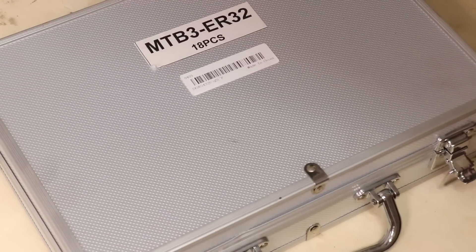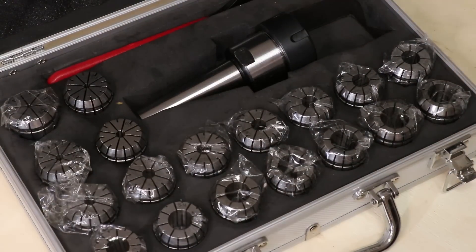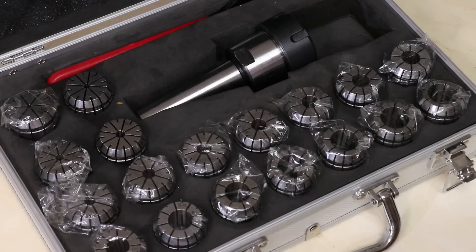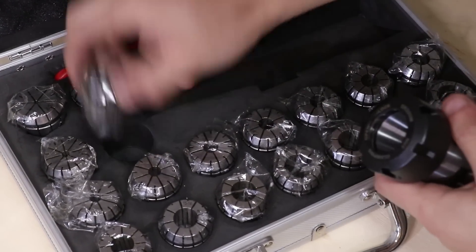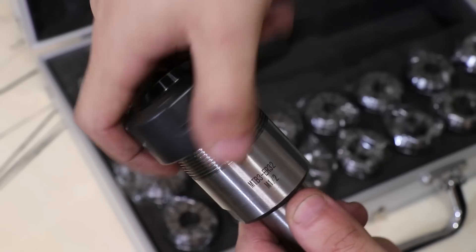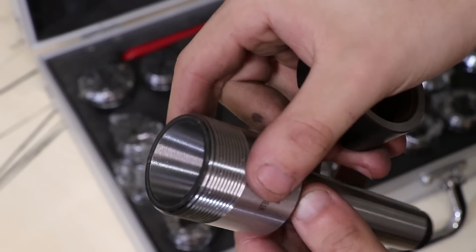So to hold my end mills, I'm going to be using a collet set. This one here is an ER32 collet set and chuck. I've ordered some extra end mills, but they have yet to arrive, so for this test, I'm going to be using a smaller quarter-inch end mill. In fact, a fair amount of my tooling is yet to arrive.